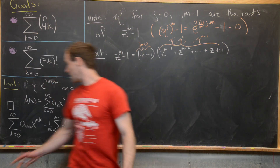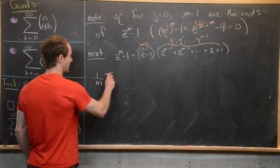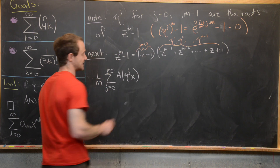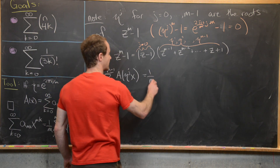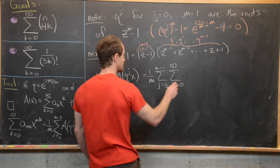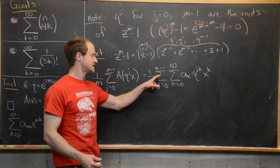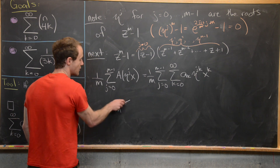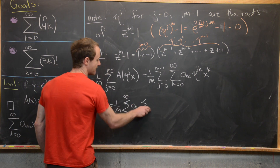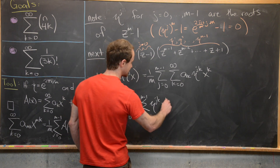Now we'll start on the right-hand side and build the left-hand side. We have 1 over m times the sum as j goes from 0 to m minus 1 of a evaluated at η^j times x. Using the definition of a, that gives 1 over m times the sum j from 0 to m minus 1 times the sum k from 0 to infinity of a_k times η^(jk) times x^k. Since the outer sum is finite, we can change the order of summation to get 1 over m times the sum k from 0 to infinity of a_k times the sum j from 0 to m minus 1 of η^(jk) times x^k.